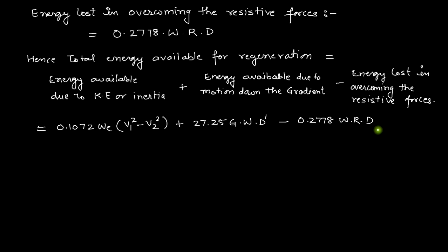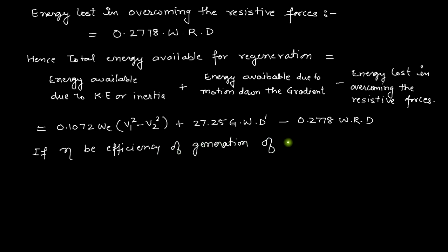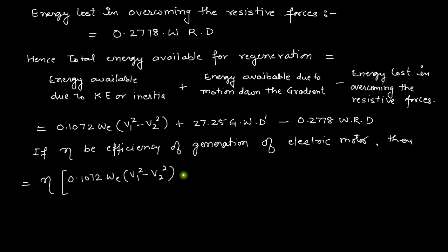In this calculation we have not yet considered the efficiency of generation of the electric motor. If η is the efficiency of generation of the electric motor, then the above expression is multiplied by η to give the actual amount of energy generated by the electric motor during regenerative braking.